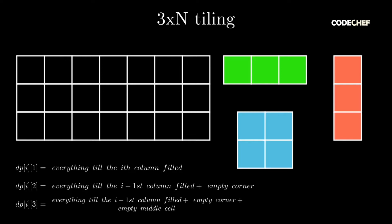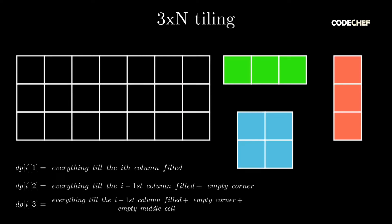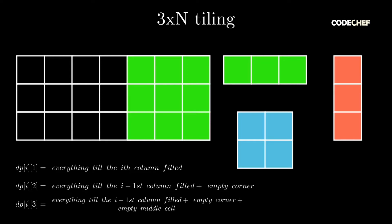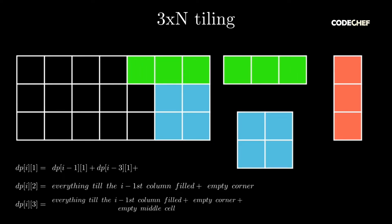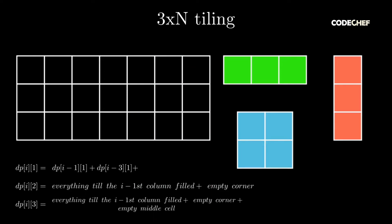Let's figure out what dp of i of 1 is. We can place a 3 times 1 tile which completely covers the i-th column, giving dp of i-1 of 1 ways. We can also place three 1 times 3 tiles covering columns i-2 to i, giving dp of i-3 of 1 ways. Alternatively, we can place a combination of a 1 times 3 tile and a 2 times 2 square, which equals dp of i-2 of 2. Since the square can be placed on the top or at the bottom, there are two ways. Hence, dp of i of 1 equals dp of i-1 of 1 plus dp of i-3 of 1 plus 2 times dp of i-2 of 2.